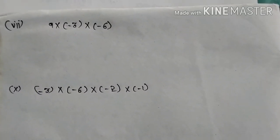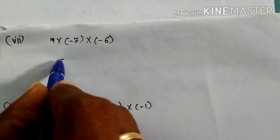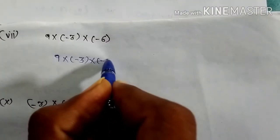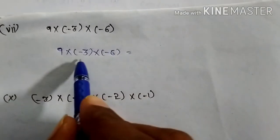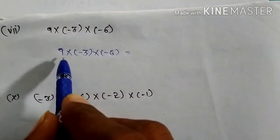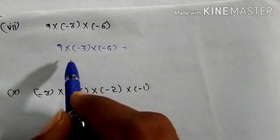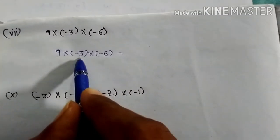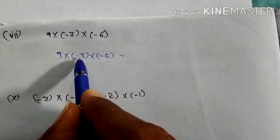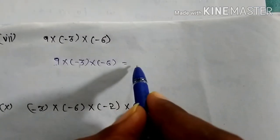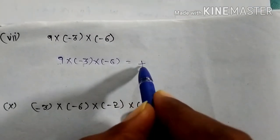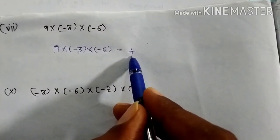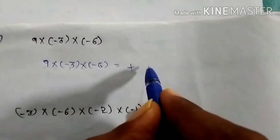One more here: 9 into minus 3 into minus 6. First, do the symbols: 9 is a positive integer, minus 3 is negative. Plus into minus gives minus. Then minus into minus gives plus. So your overall answer is a positive integer. 9 times 3 is 27.